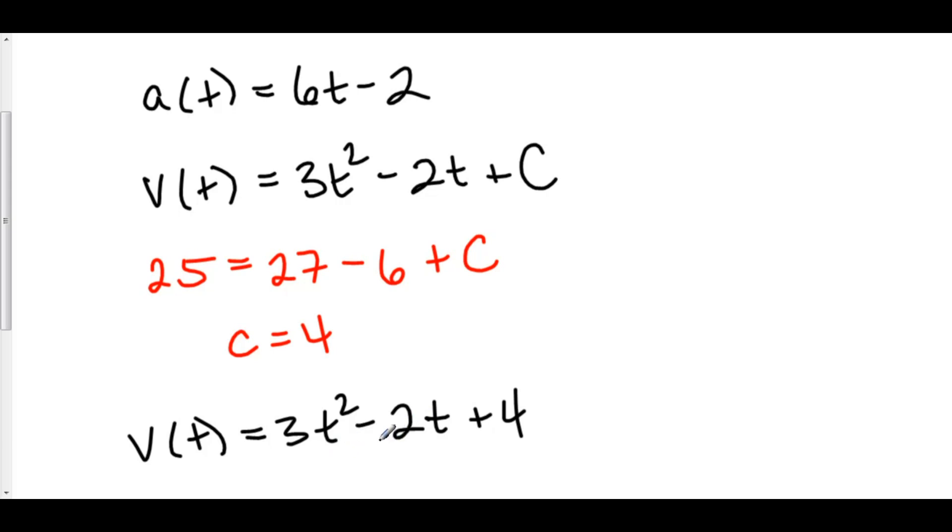Or you can just plug five into v(t) and you get, you know, three minus two plus four gives you five. But the real reason behind that is net change plus initial condition. And that is the secret to all of these problems.